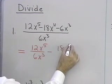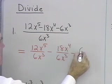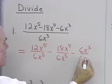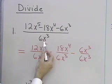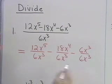So here I'm going to have 18x to the fourth over 6x cubed, and then 6x cubed over 6x cubed. So with this type of division, division by a monomial, what I do is divide each term in the numerator by that monomial.